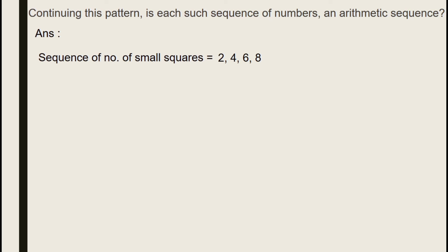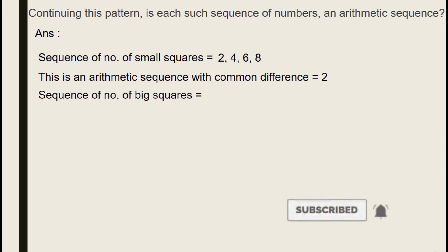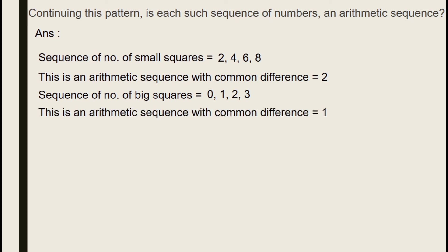Looking at the small squares: 4 minus 2 is 2, 6 minus 4 is 2, 8 minus 6 is 2. The common difference of small squares is 1 — with the sequence 0, 1, 2, 3, etc. 1 minus 0 is 1, 2 minus 1 is 1, 3 minus 2 is 1. So it's an arithmetic sequence with common difference 1.